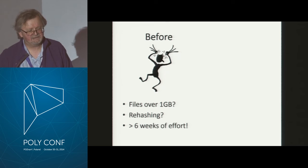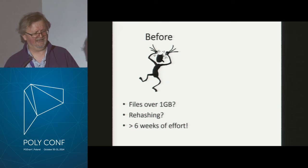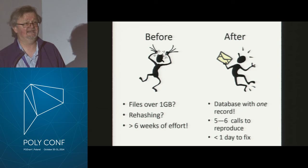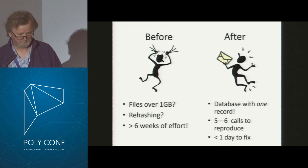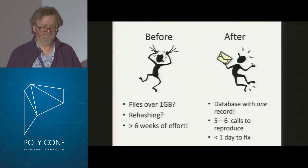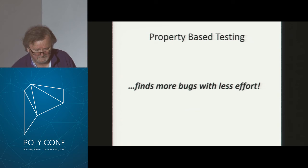Before I did this work, more than six weeks of effort had gone into trying to pin these problems down. The best theories were: it seems to happen when the file is around one gigabyte, maybe it's something to do with rehashing. Now we know you need a database with at most one record, and either five or six calls to provoke the bug. Given that minimal failing example, it took less than a day to find and fix the code. This is a very strong demonstration of the power of shrinking and generating tests — and of how hopeless it is to debug race conditions from failures that happen in production, when not only the five or six things that matter have happened, but billions of irrelevant events as well.